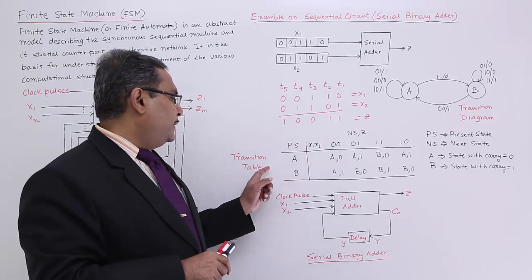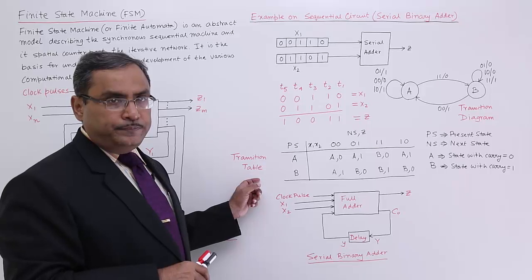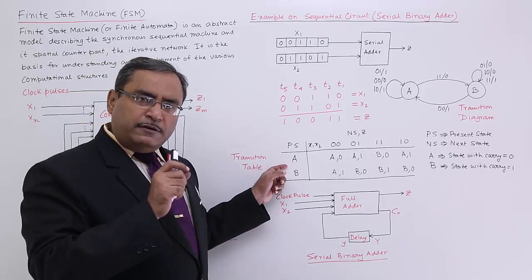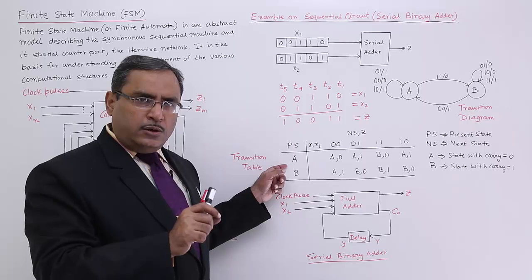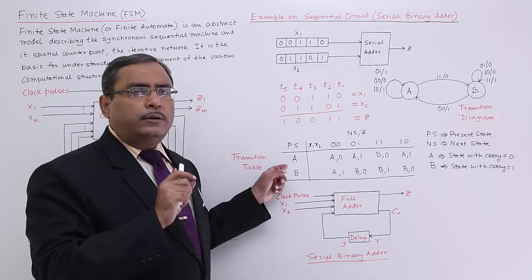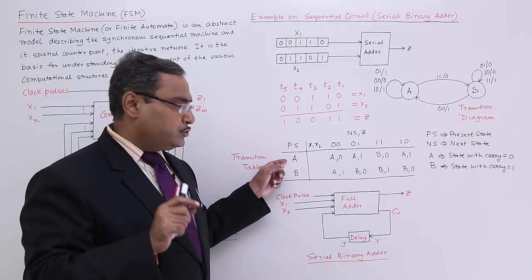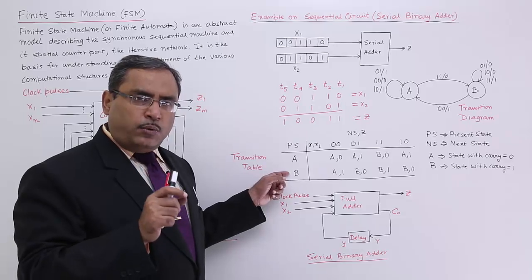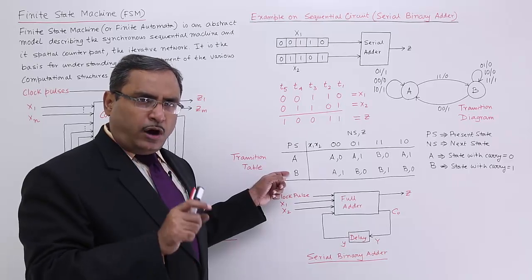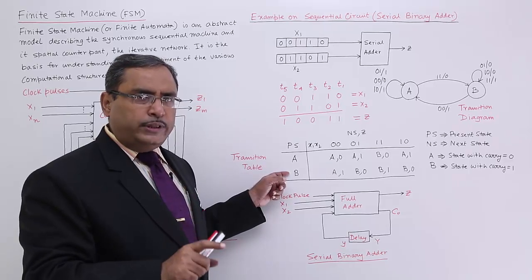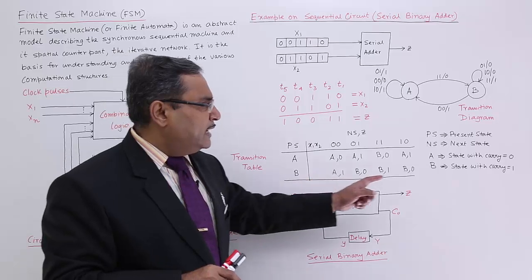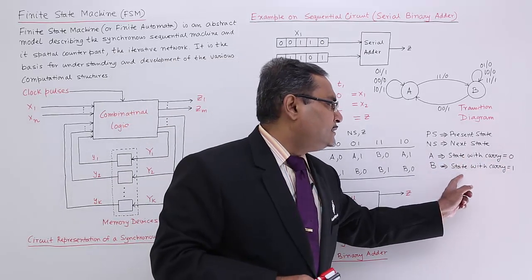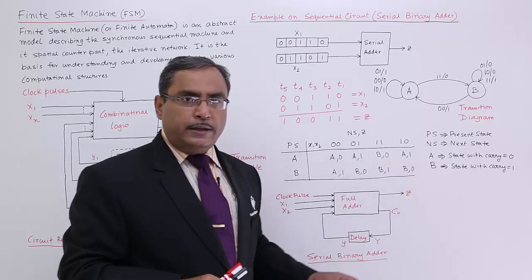This is the transition table. State A represents the state of the serial adder with carry equal to 0, and state B represents the state with carry equal to 1. These are the two states — A with carry 0 and B with carry 1 — and the table shows the next state and present state.